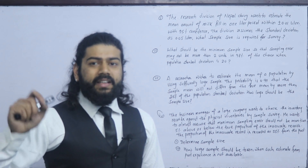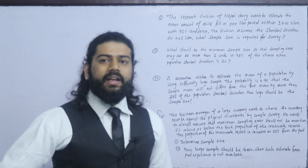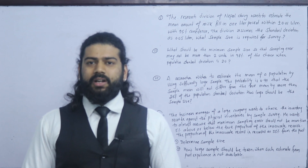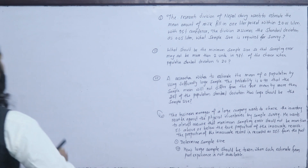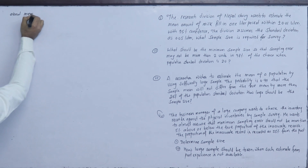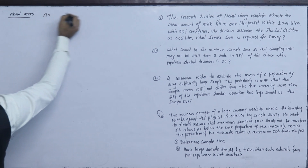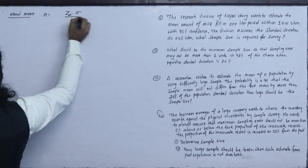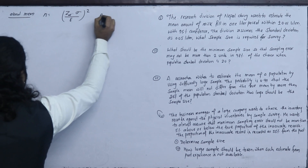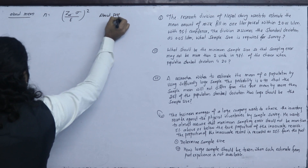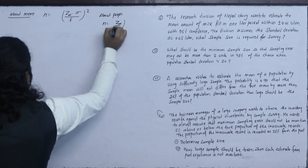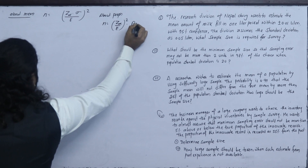So this is the condition — the error is not something we must accept; we use it to determine the sample size. For mean, the formula is: n = (z-alpha × σ / e)². For proportion, the formula is: n = (z-alpha / e)² × P × Q.